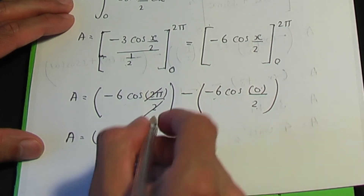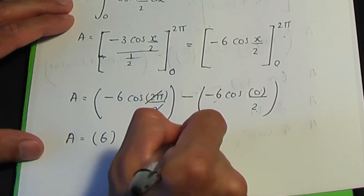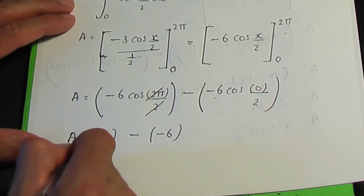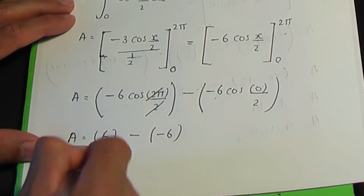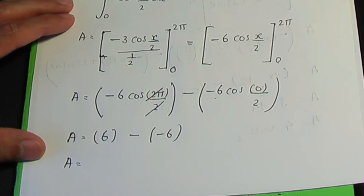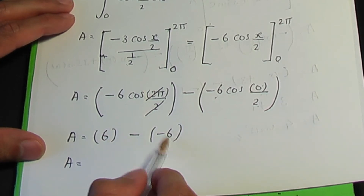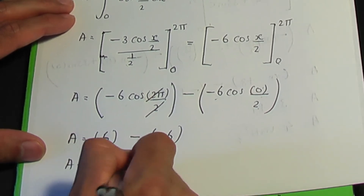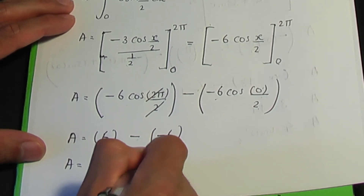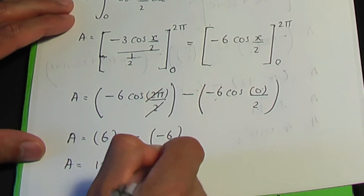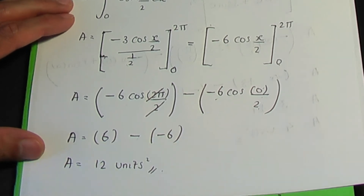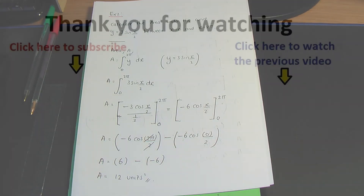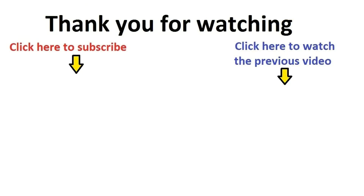Simplifying: six minus minus six equals twelve units squared. That is the solution to example two.